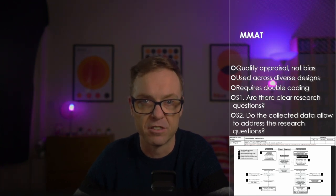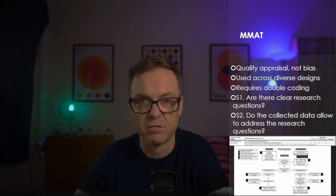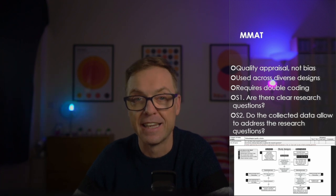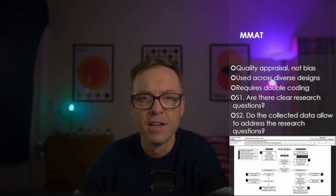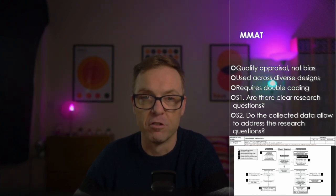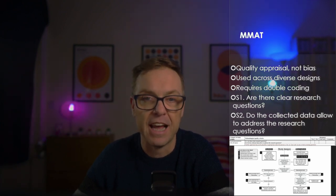How does the MMAT work? First, you're asked two screening questions. Question one: are there clear research questions? Question two: do the data allow to address the research questions? If you respond no or can't tell to one or both questions, the study cannot be appraised using the MMAT. Subsequently, for studies that have passed that stage, you need to choose the appropriate category. You look at the descriptions of the methods used in included studies and use an algorithm or decision tree to decide which set of appraisal questions to use.